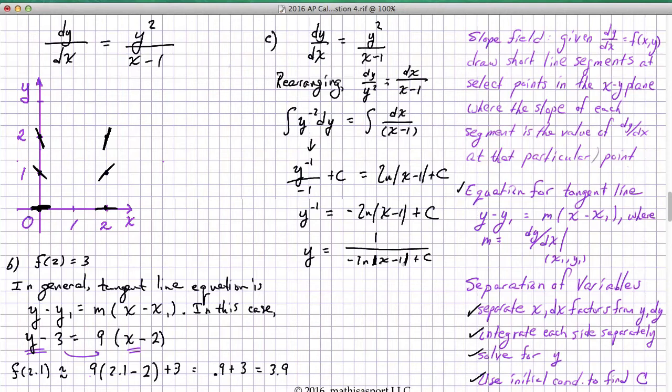We have solved for y. Now it's time to use the initial condition to figure out the full differential equation or the particular solution to the differential equation. Using initial condition, we know that when x is 2, y is 3. So I'm going to write 3 equals 1 over negative ln of 2 minus 1 plus whatever c is.